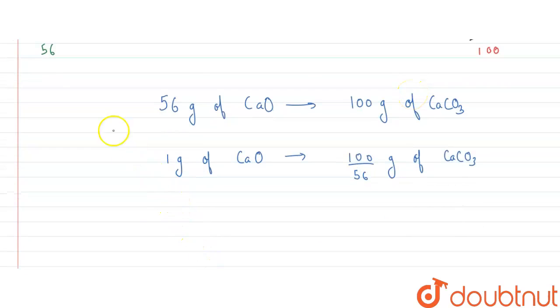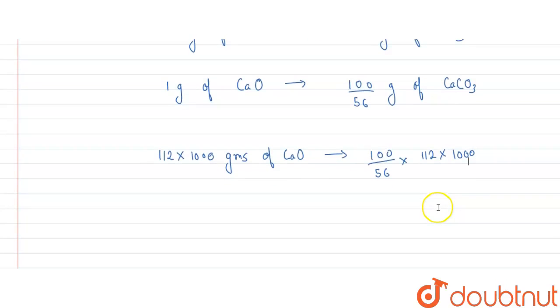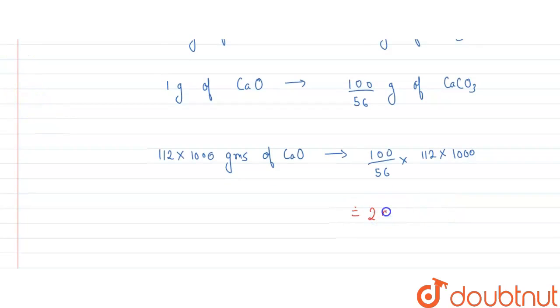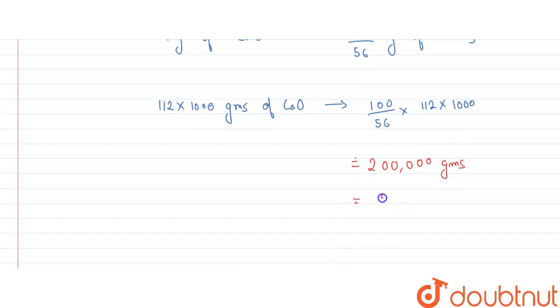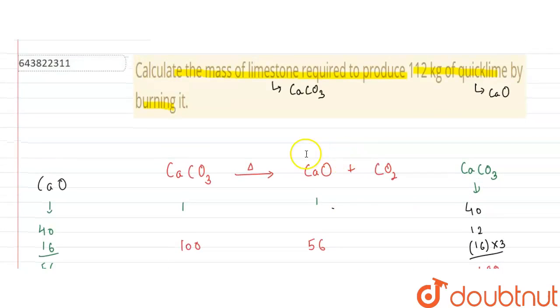So we have to calculate it for 112 kg, so that means 112 into 1000 grams because it is in kg so we will multiply it by 1000 to get it in grams. Calcium oxide, that is quicklime, will give us 100 upon 56 into 112 times 1000. So on solving this we get two lakh grams or I can write it as 200 kgs of calcium carbonate. So we should have 200 kgs of calcium carbonate in order to produce 112 kgs of quicklime. So with this we complete our solution, thank you.